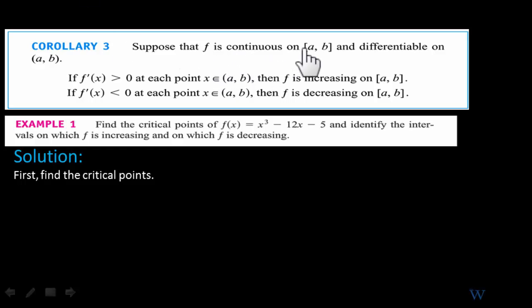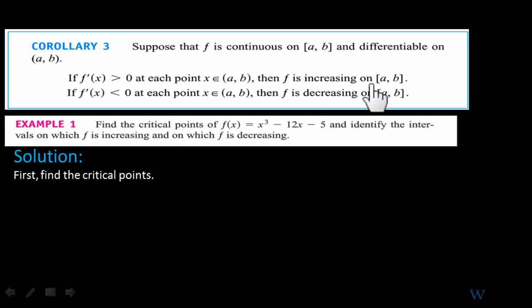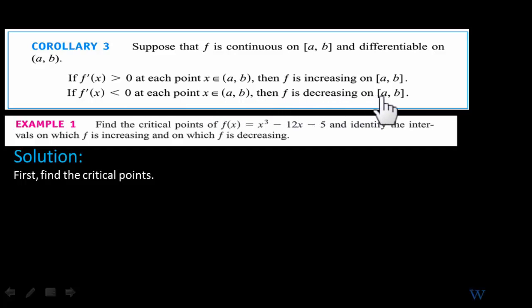Suppose f is continuous on a closed interval [a, b] and differentiable on the open interval (a, b). If the derivative is positive at every point in the interior (a, b), then f is increasing on that interval. If f prime is negative — that is, less than zero — at each point on the interior (a, b), then f is decreasing.